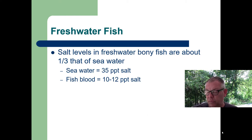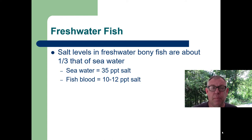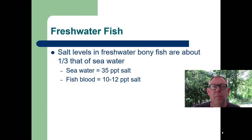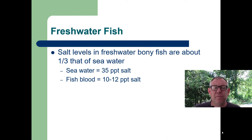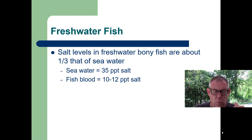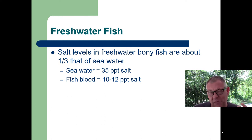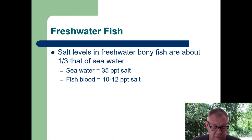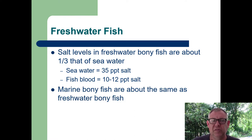When talking about salt levels, the rule of thumb for a bony fish — the kind you typically think of when you think of a fish — is that they are about one-third the salinity of seawater. Seawater is roughly 35 parts per thousand (PPT) salt, which is grams per liter. Fish blood usually runs 10 to 12 parts per thousand. So freshwater fish are about one-third as salty as seawater.